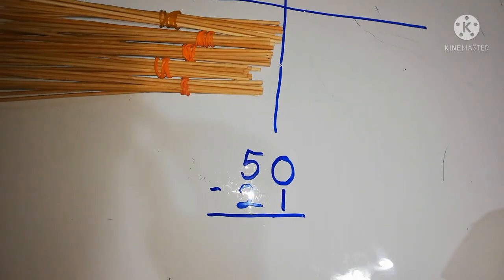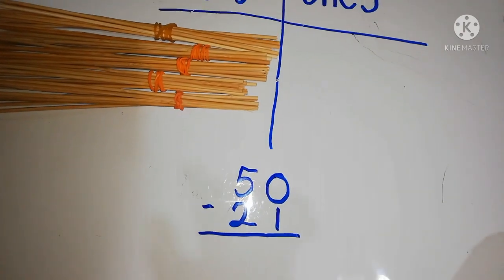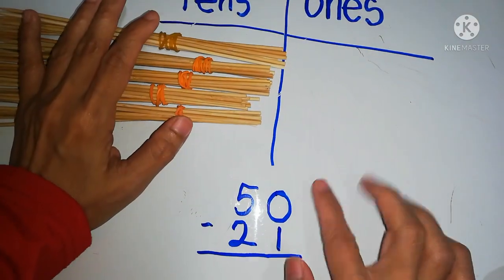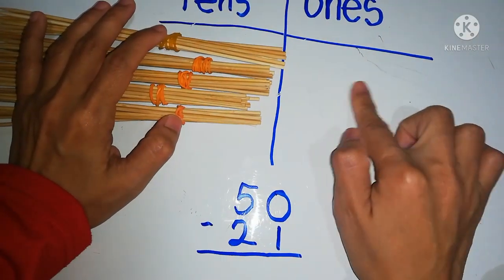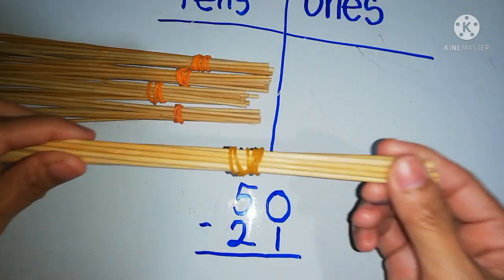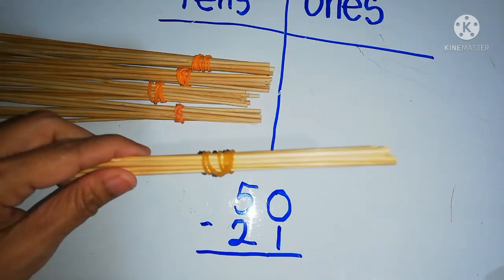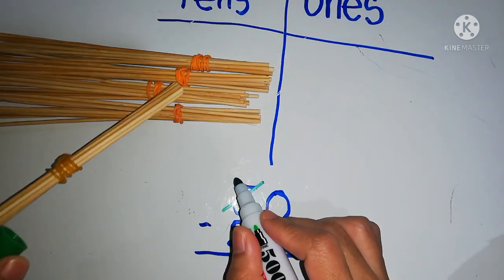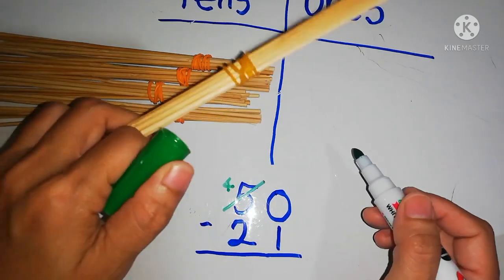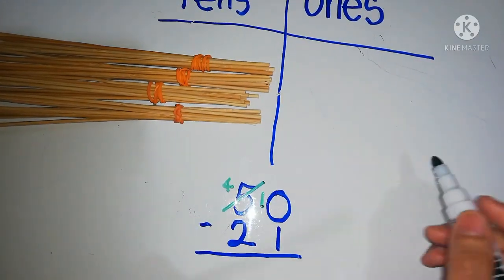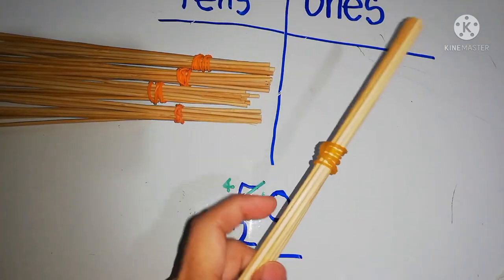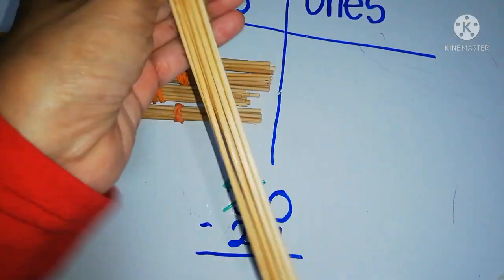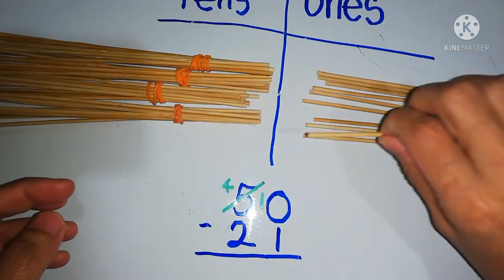The next equation is 50 minus 21. 50 minus 21 — so we have minus 1. But because there are no sticks in the ones place, we take 10 from a ten. Taking 1 ten from a ten.